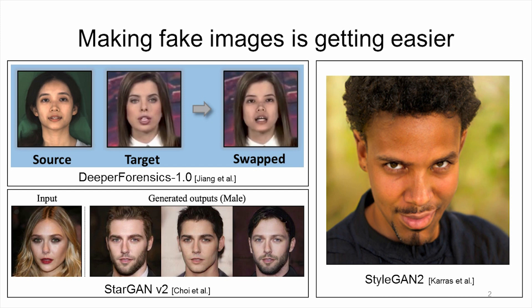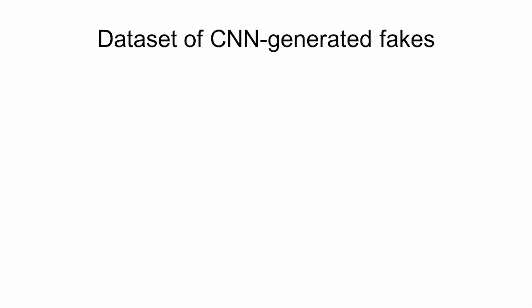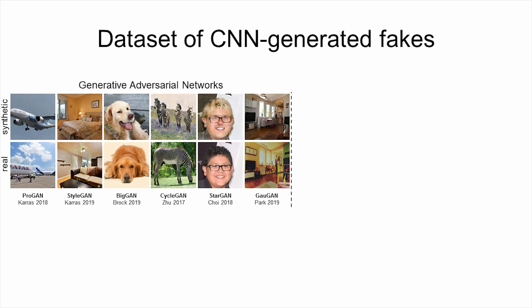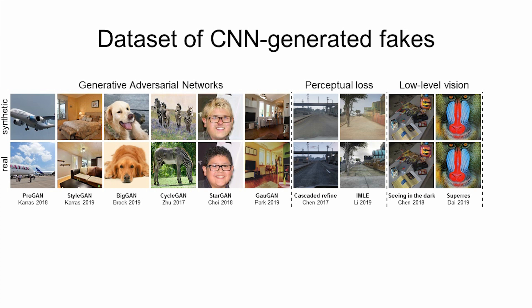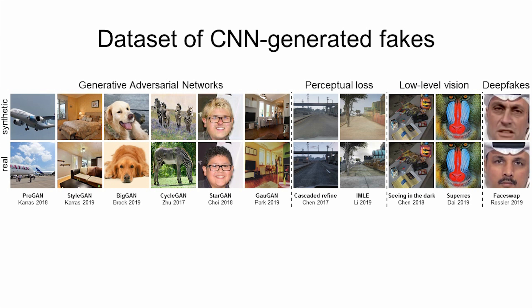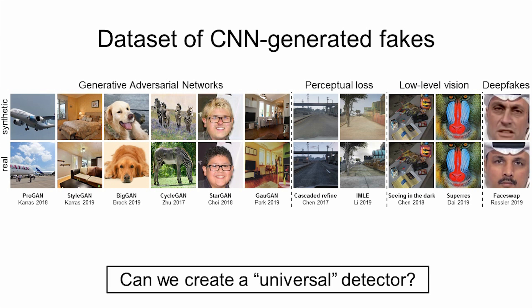Besides generating fake faces, CNNs can also be used for a lot of other image synthesis tasks. We collected a dataset of CNN-generated images across a number of different methods. The dataset includes state-of-the-art GANs that generate various objects or transfer image domains and styles, image translation models trained only with perceptual loss, CNN-based models for low-level vision tasks including super-resolution and low-light imaging, and finally deepfakes.